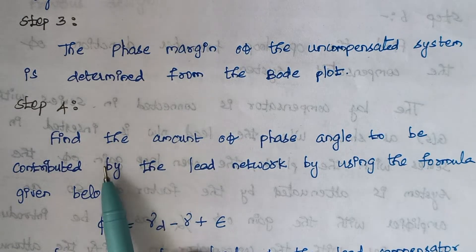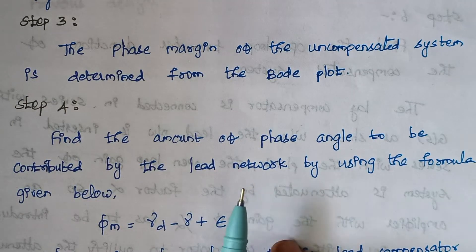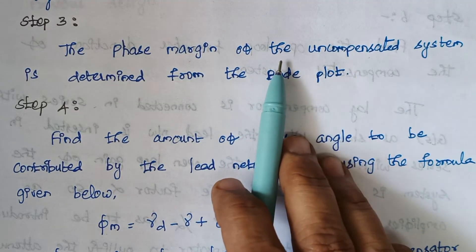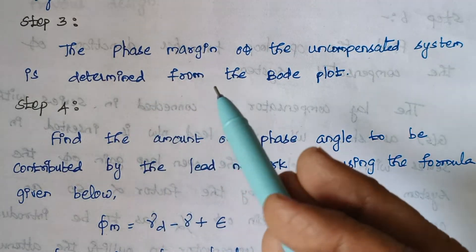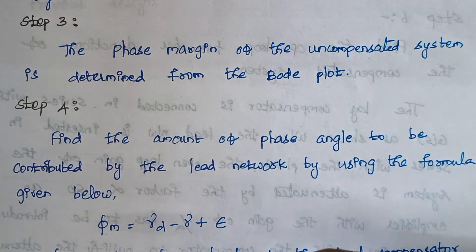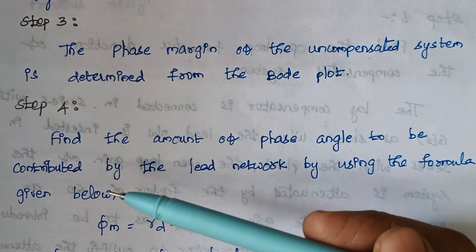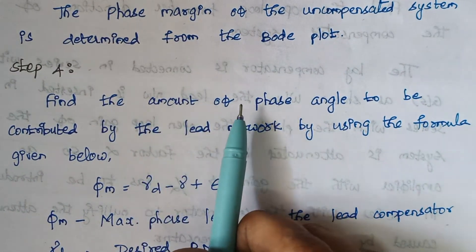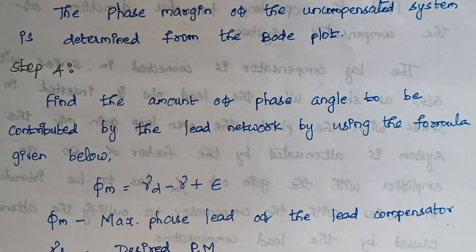Step 4 is to find the amount of phase angle to be contributed by the lead network using the formula. The phase margin of the uncompensated system won't satisfy the requirement given in the problem — if it did, there would be no need for a compensator. There will be some difference, so we go for the design of compensators. The lead network should contribute some phase angle to satisfy the given requirement.